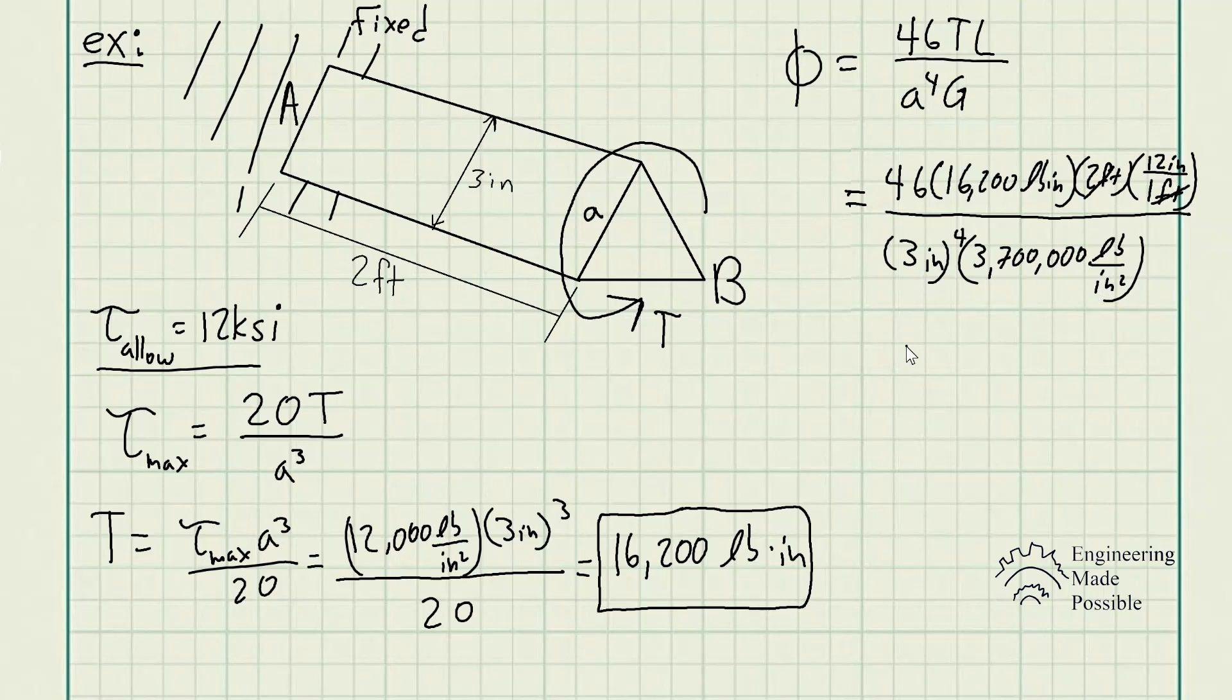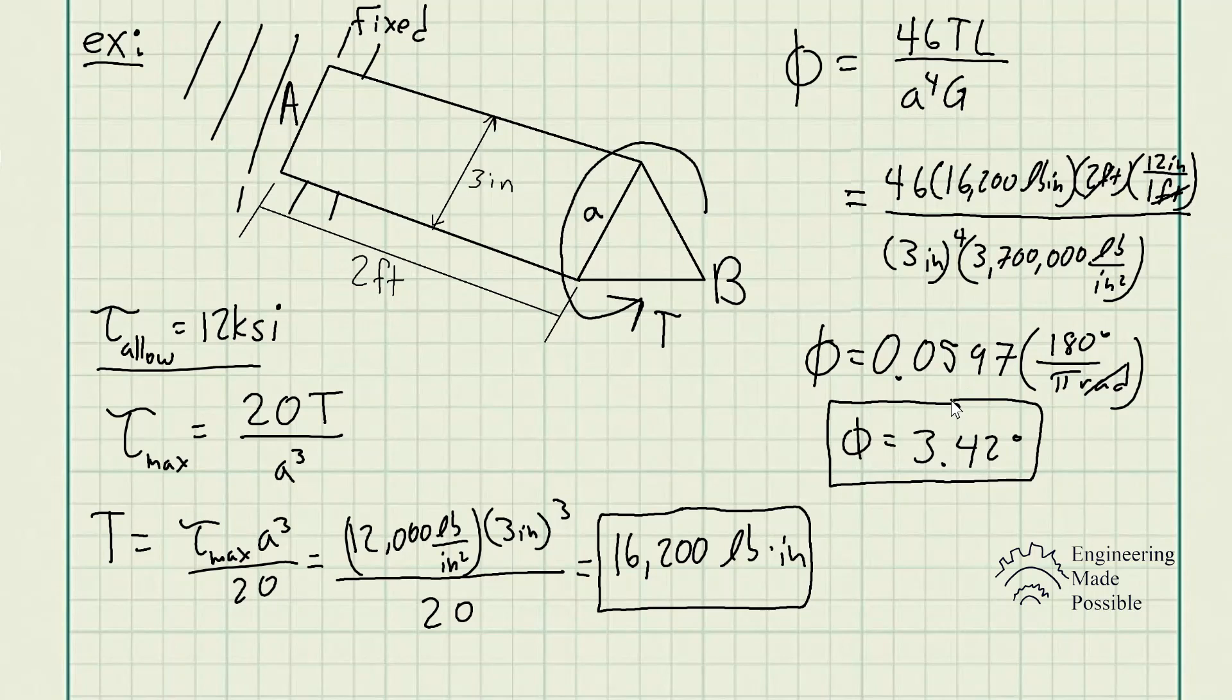Let's go ahead and solve our angle of twist in radians. And so we get 0.0597 radians. We went ahead and converted the radians into degrees. And we get 3.42 degrees is the angle of twist at point B.